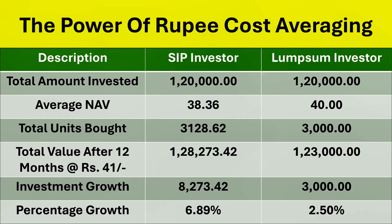If Richa does not opt for SIP and chooses to invest a lump sum amount, then according to the NAV of January 2023, which is Rs 40, the number of units purchased would be 3,000. By December 2023, the NAV of that fund is Rs 41, and the value of the SIP investments is Rs 1,28,273, that is 3,128 units multiplied by 41. On the other hand, the value of the lump sum investments is Rs 1,23,000, which is 3,000 units multiplied by 41. The SIP investments are more by Rs 5,273, or 4.39%.